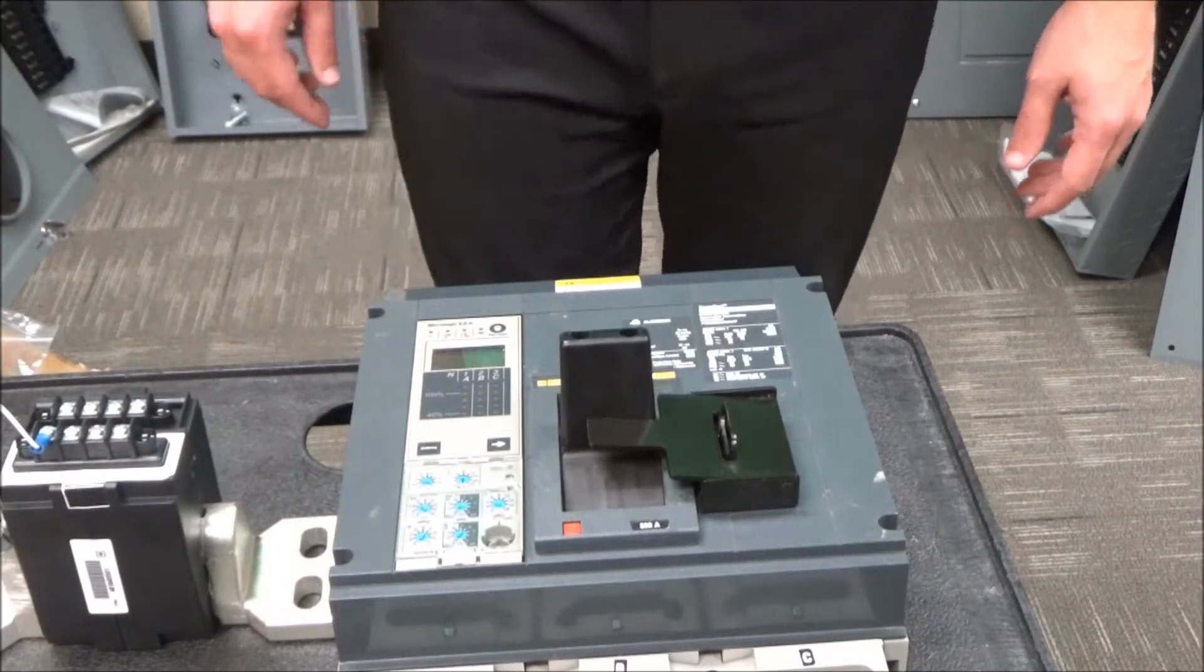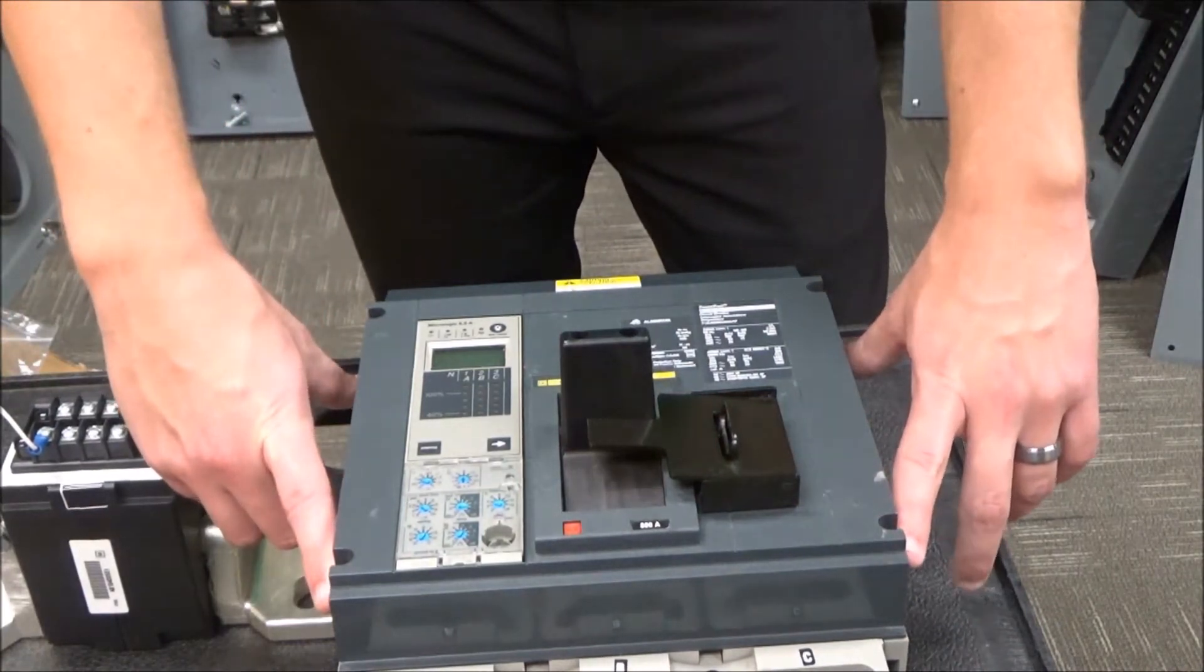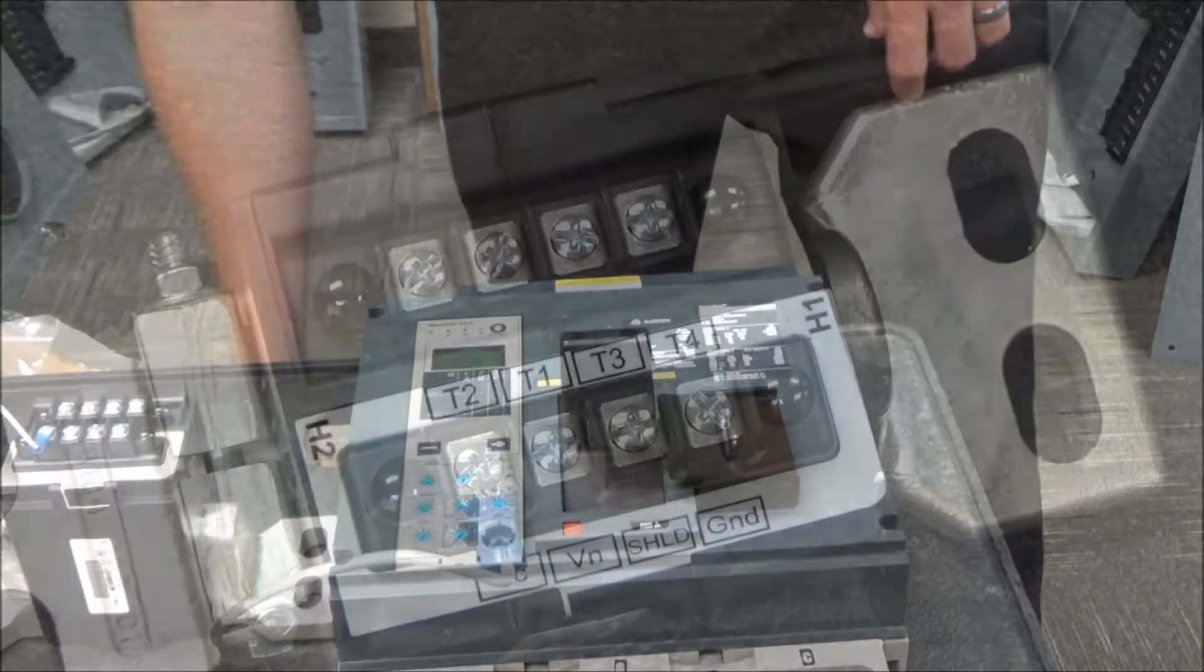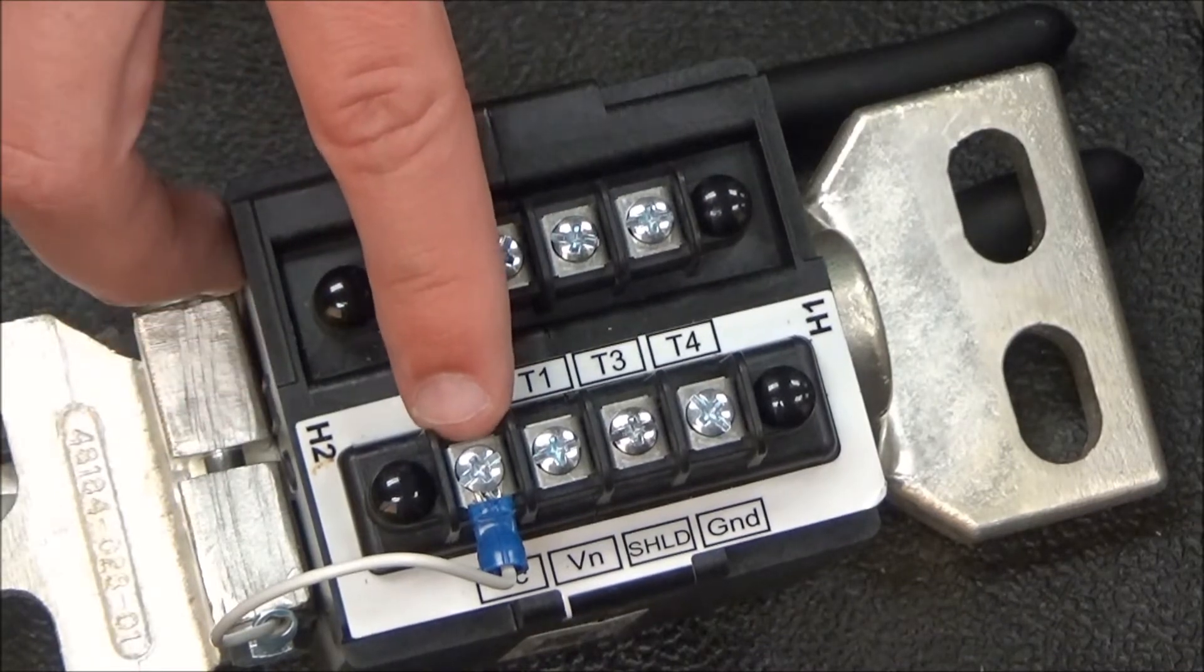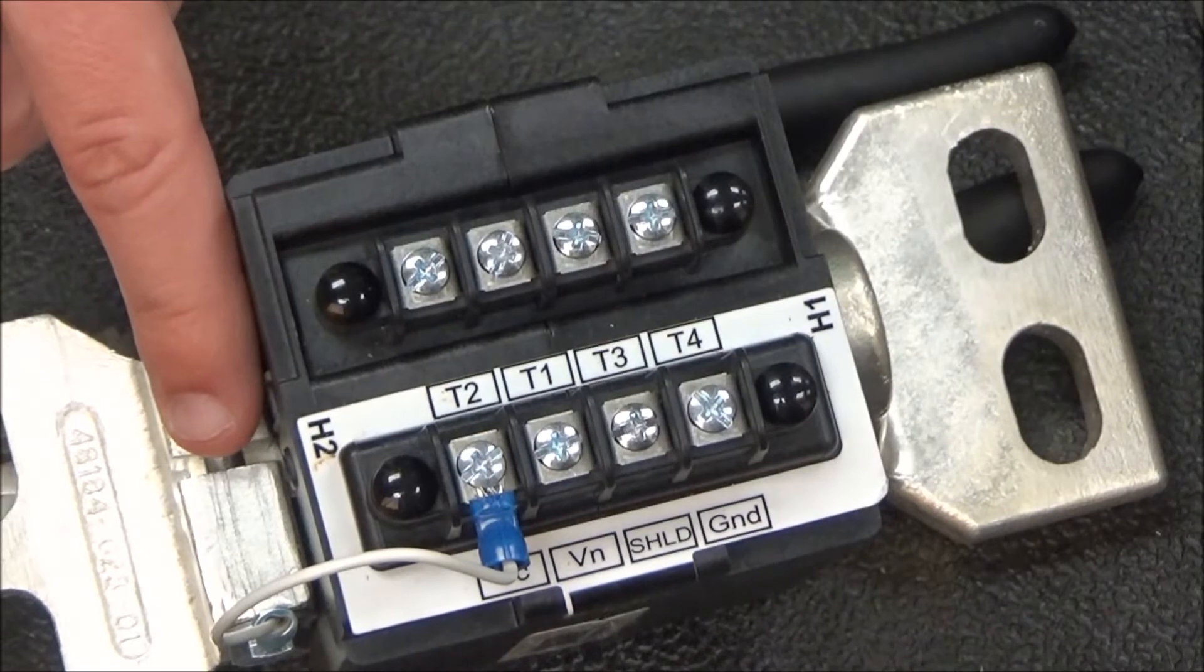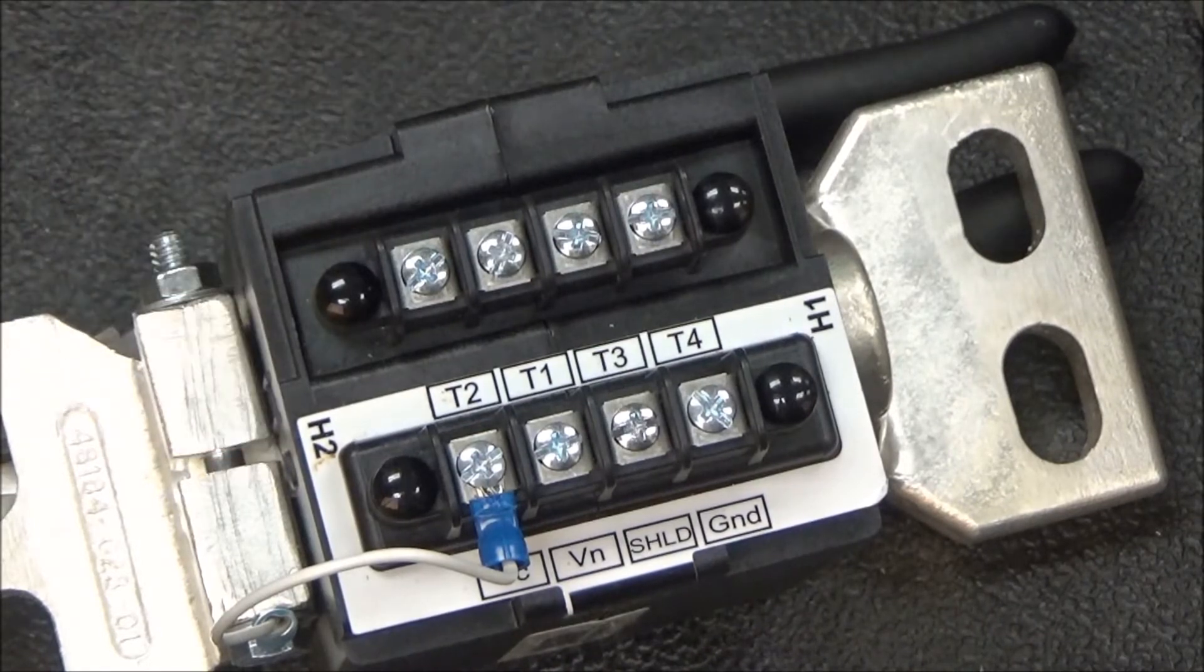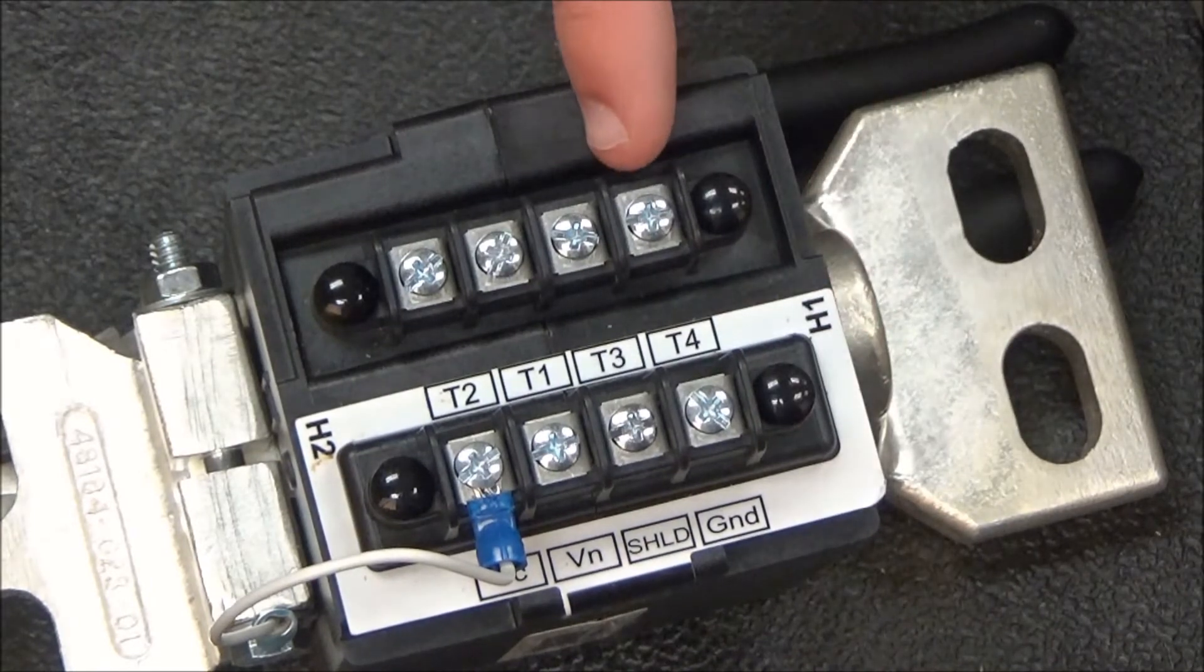First, you'll remove the cover by removing these four screws. As you can see, the only pre-installed jumper on the Neutral CT is between the VC terminal and the H2 side of the Neutral CT. There is also an internal jumper between the ground terminal and the T4 terminal.